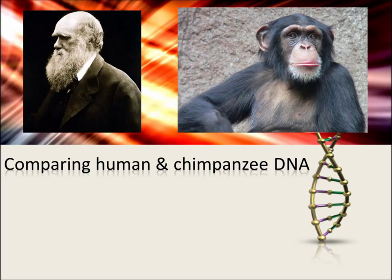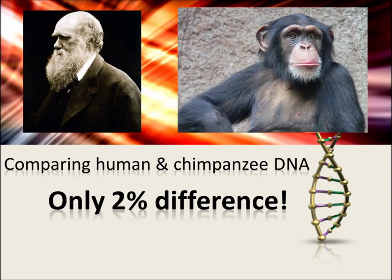Comparing human and chimpanzee DNA. Scientists say that our genes differ only about 2% with that of a chimpanzee. But how exactly do they know? In a couple of minutes you will know.